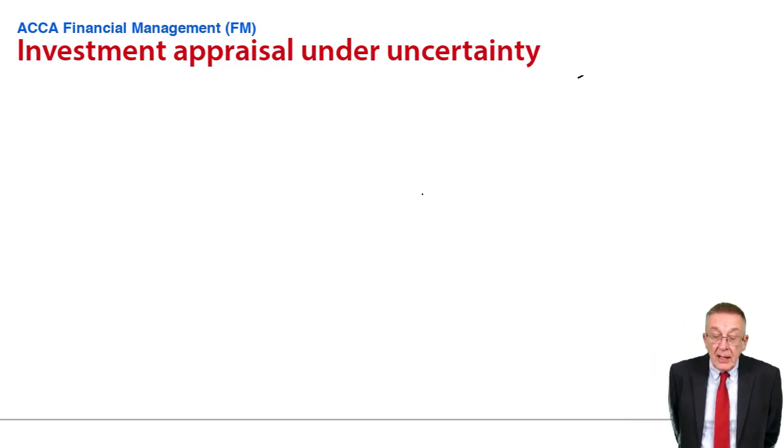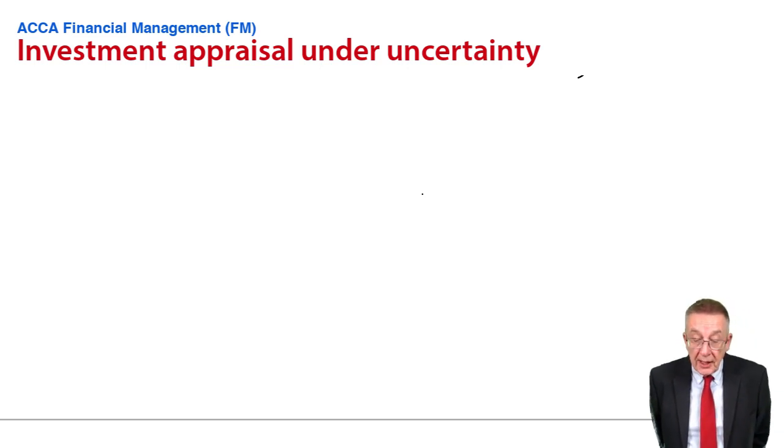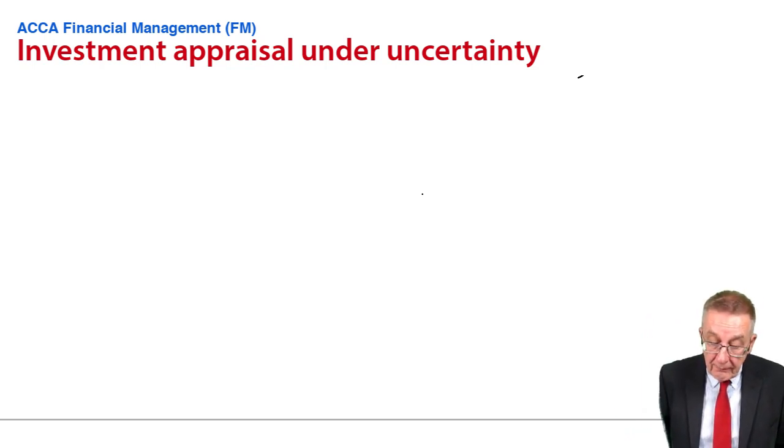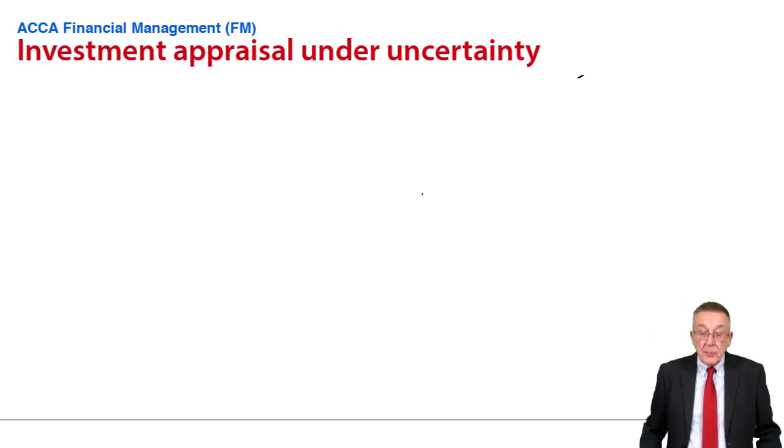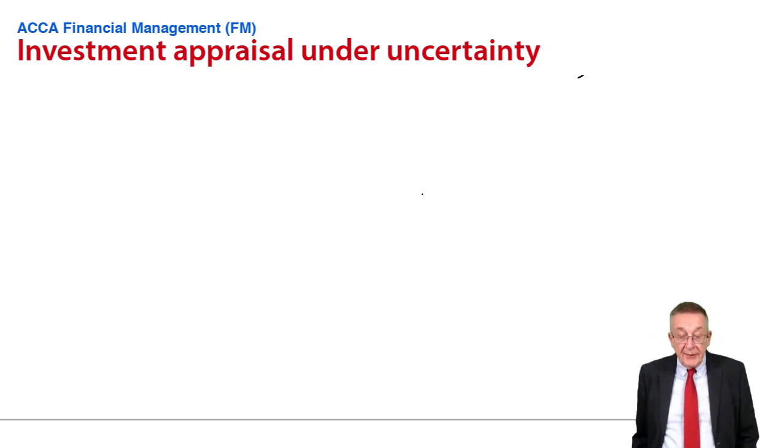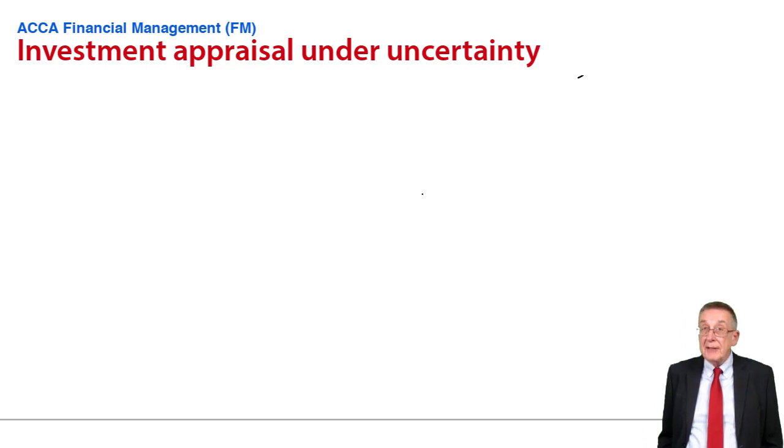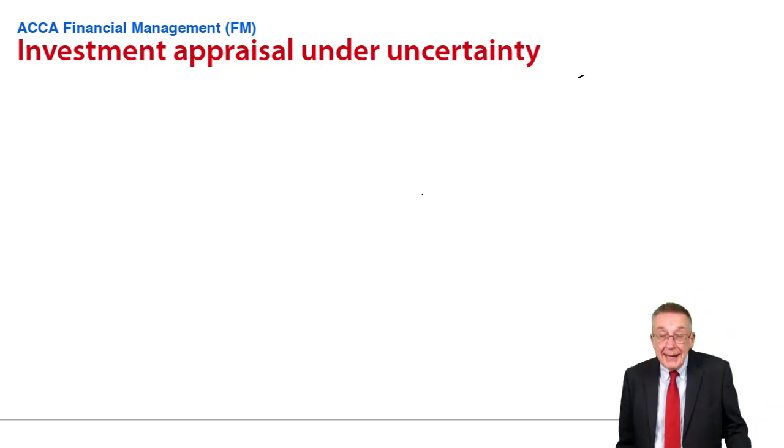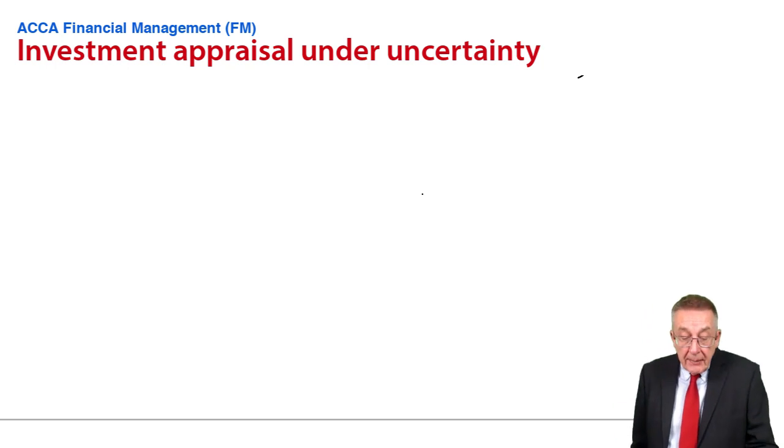The third exercise is something called Expected Values, which you should be aware of from paper F5. Let's look at the example. Diger is considering launching a new product. It will need an additional capital investment of £200,000. The selling price will be £10 a unit. Diger has ascertained that the probability of a demand of 50,000 units a year is 0.5 or 50% chance. There's a probability of 0.4 it will be 20% higher, and 0.1 probability it will be 20% lower.